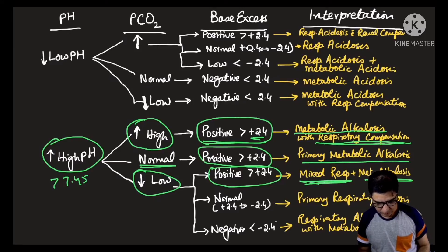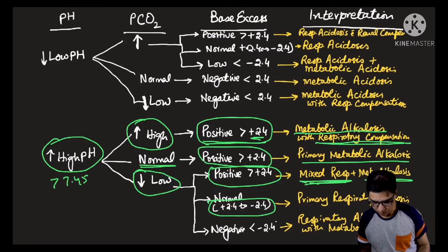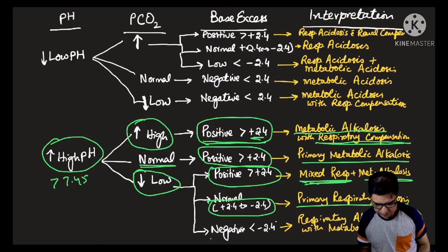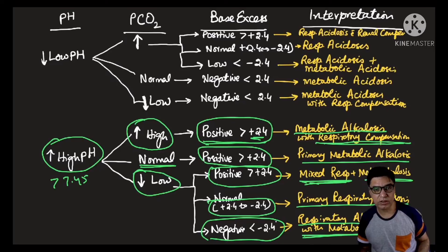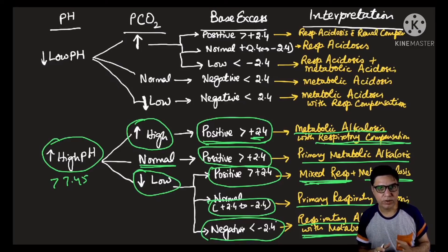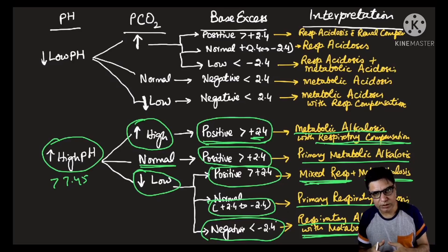With a low pCO2 and high pH: if the base excess/deficit falls between plus 2.4 and minus 2.4 (e.g., plus 2 or minus 1.5), you have a primary uncompensated acute respiratory alkalosis. If the base excess is negative — say minus 3, minus 4, or minus 4.5 — then you have a primary respiratory alkalosis with metabolic compensation, where the metabolic system has compensated for the respiratory alkalosis.